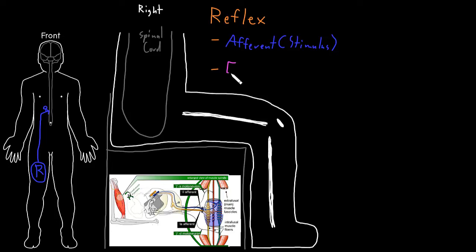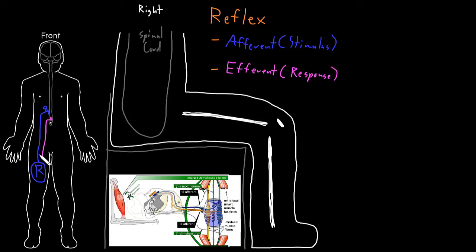The other part of a reflex is called the efferent part of the reflex, which carries information away from the central nervous system to cause a response somewhere in the periphery. There will be some sort of neuron that carries that information away from the central nervous system out into the periphery to cause some sort of response. Now some reflexes, like the muscle stretch reflex I'm just about to describe, happen on the same side, so that the afferent part brings information in from one side of the body, and the efferent part brings information back to that same side to cause the response.